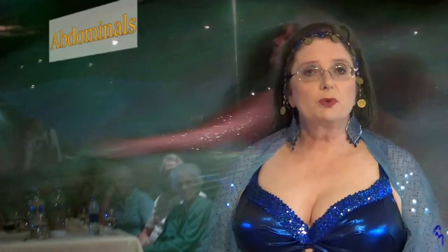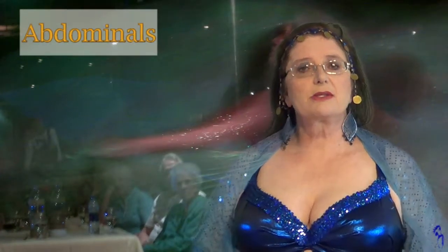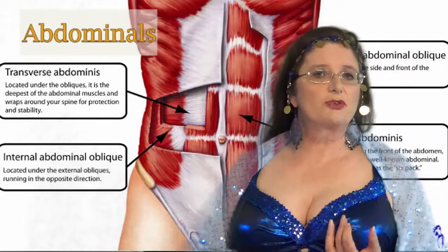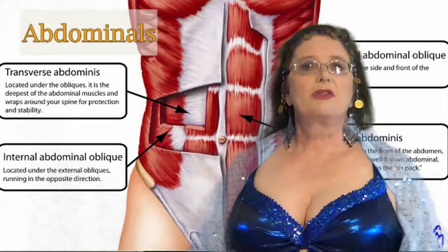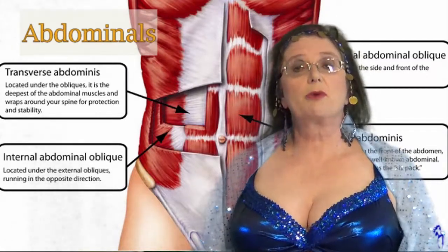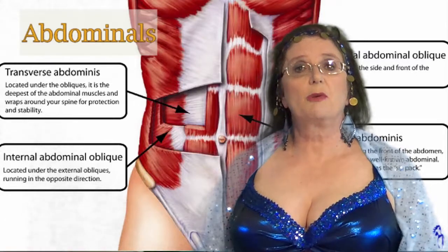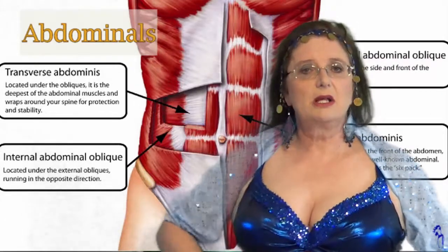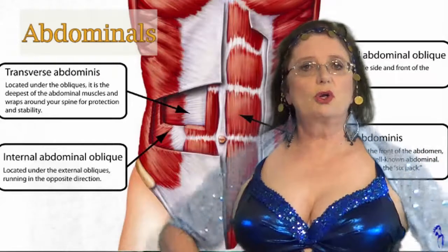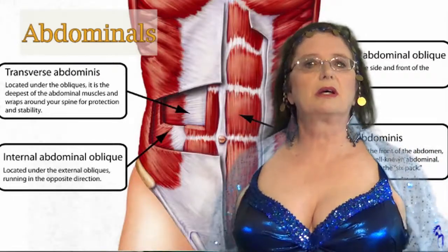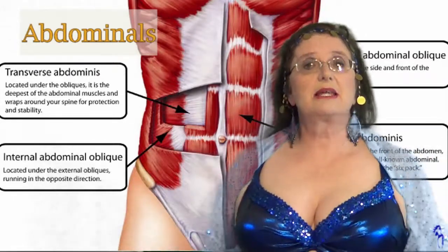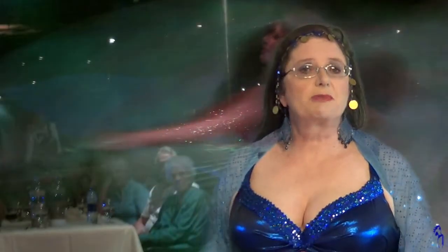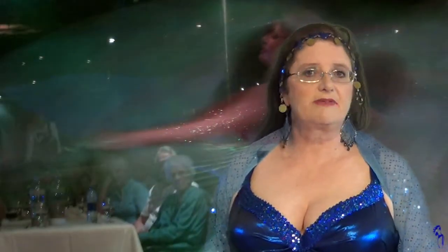Your abdominals are the muscles of the abdomen. There are superficial abdominal muscles and there are a lot of them, but the three most common ones people know about are the rectus abdominis, sometimes called the six-pack — they go on the outside. You have two sets of obliques running in different directions, and then underneath that you have the TAs, the transverse abdominis. Those are the ones people most commonly know about, but there are plenty of others.